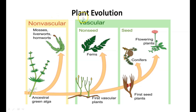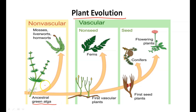Let's get started with plant evolution. In the very beginning, plants like green algae have a common ancestor which gives rise to mosses, liverworts, and hornworts, which are known as bryophytes.